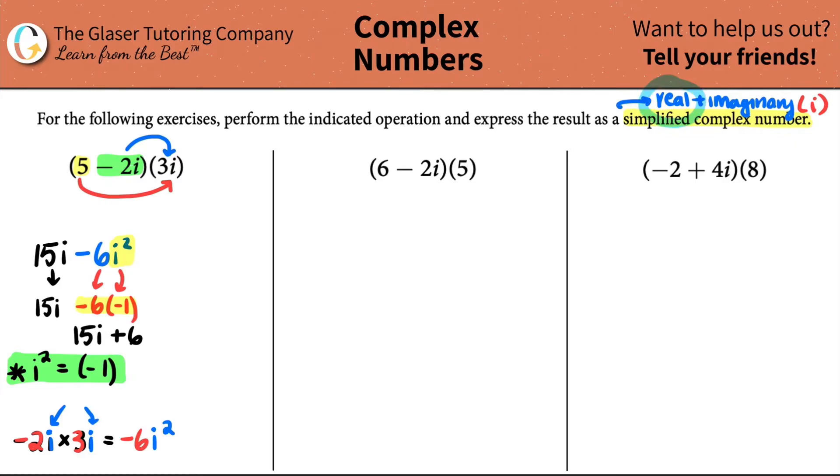And now I'm getting closer to that simplified complex number. However, the real number has to come first. The 6 just has to be in the front. So I'm just going to swap these around. So this is the same thing as saying 6 plus 15i. And that is your final answer. There you go. Here's your real value. Here's your imaginary value. That's it for this one.